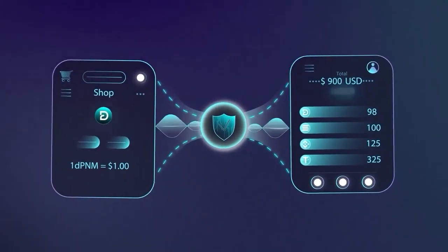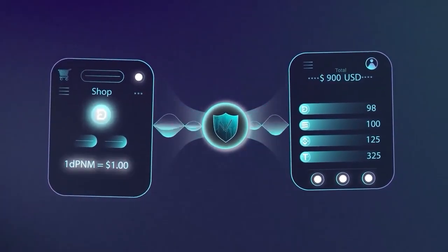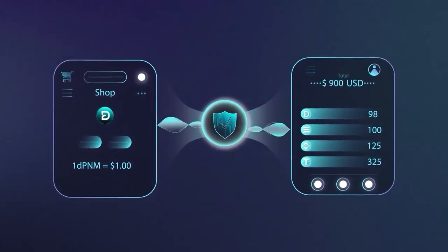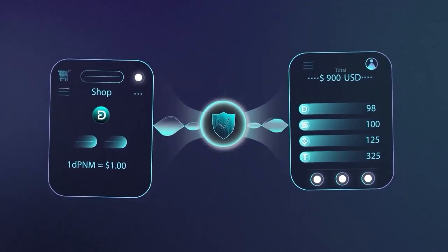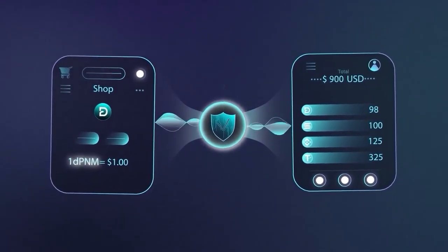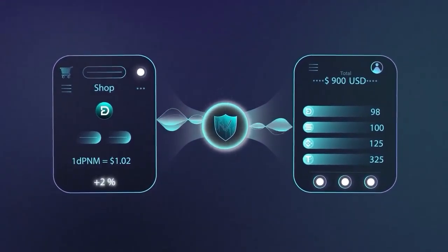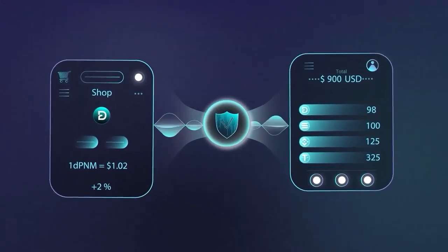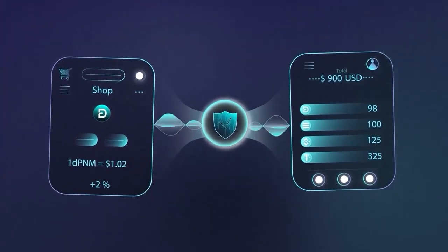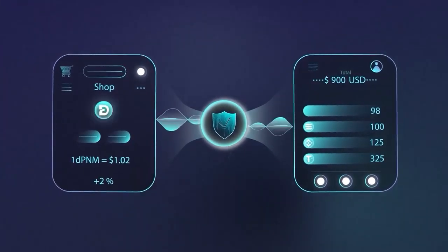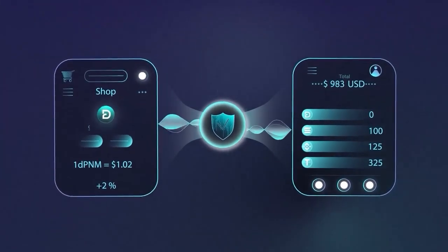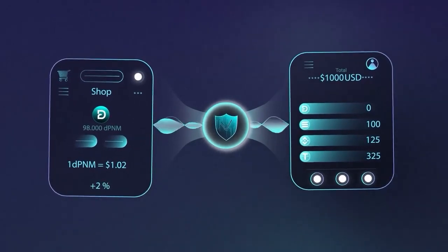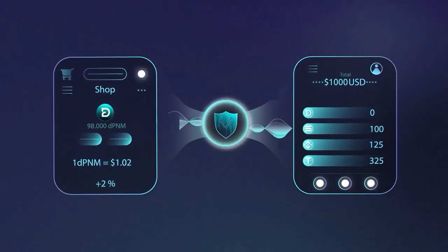So the price of one coin is $1.02. One simple operation has increased the price of one coin by 2%. At the same time, this shop is ready to buy those coins back from Bob at any time, but at a price 2% higher than Bob bought them.